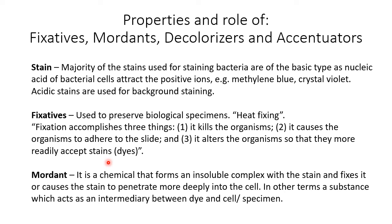A mordant is a chemical that forms an insoluble complex with the stain, and it fixes or causes the stain to penetrate more deeply into the cell so the complex is not washed off. In Gram staining, Gram's iodine is the mordant — it forms an insoluble complex with crystal violet. If the culture is Gram positive, this crystal violet–iodine complex penetrates so deeply into the cell that when you try to decolorize, it will not wash off, and the culture will not take up safranin.